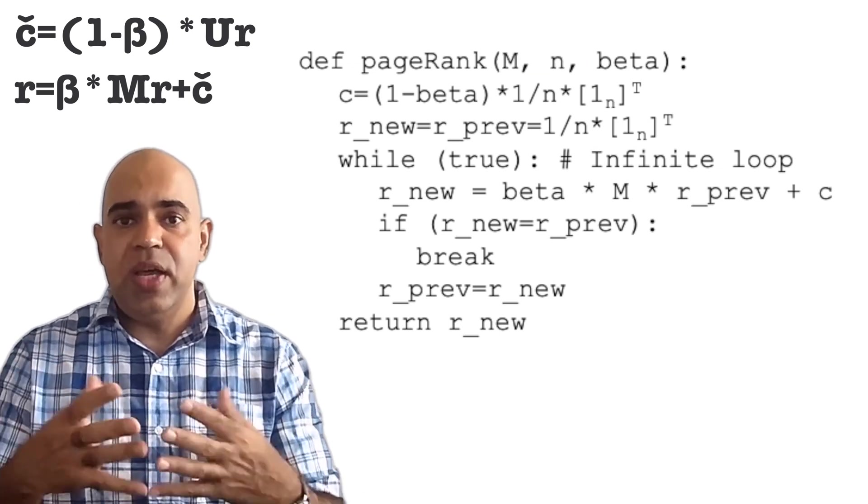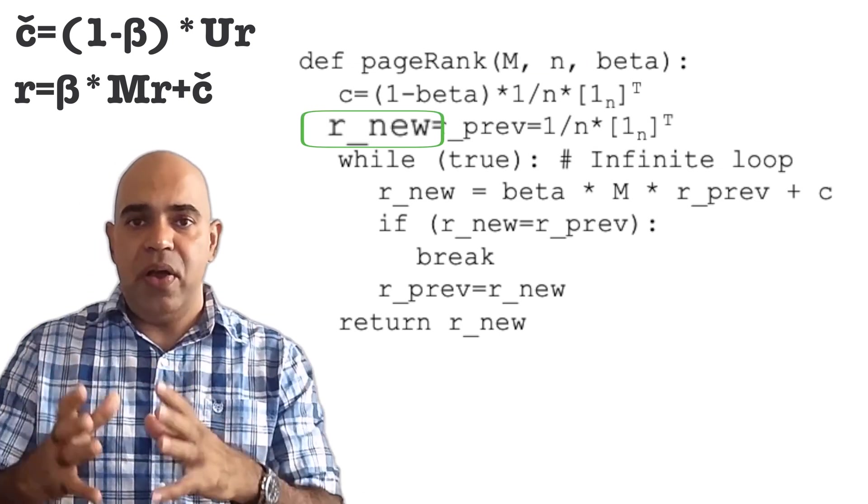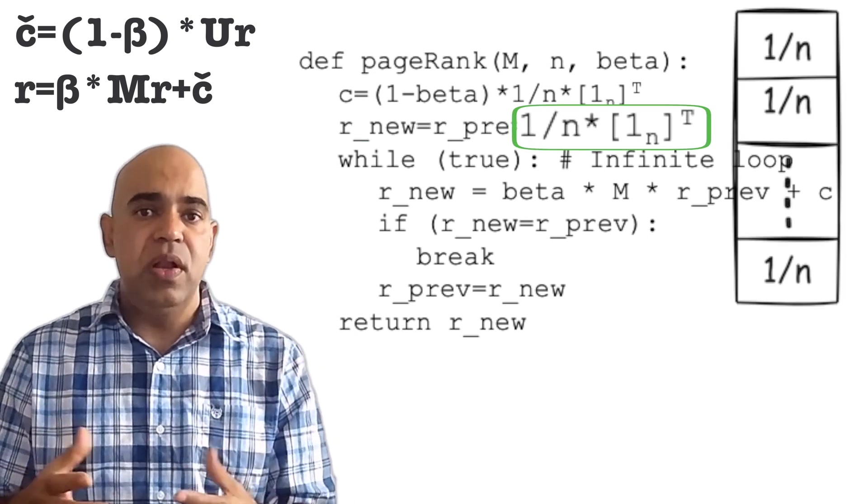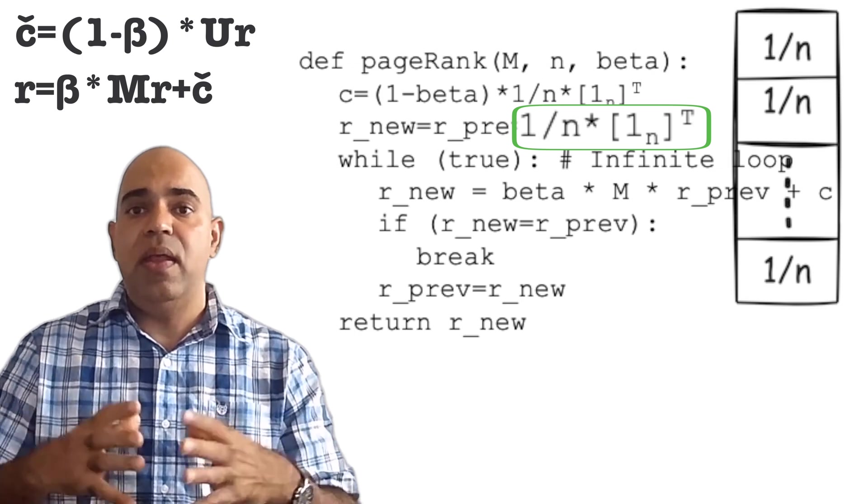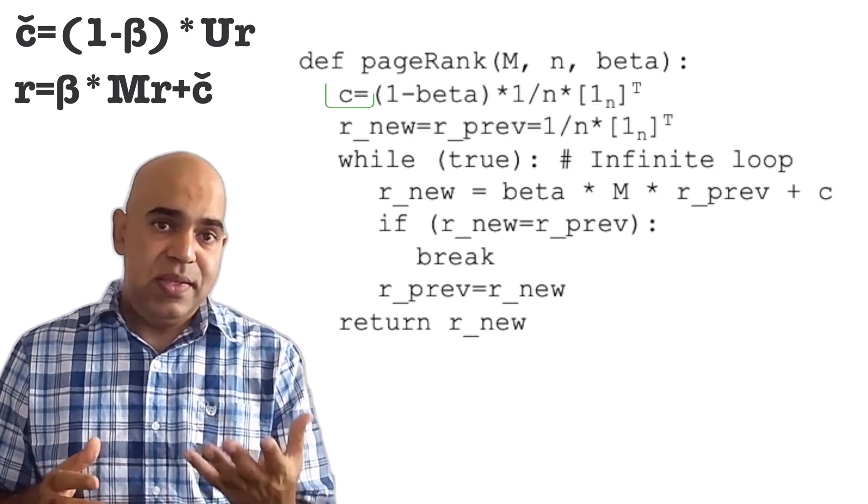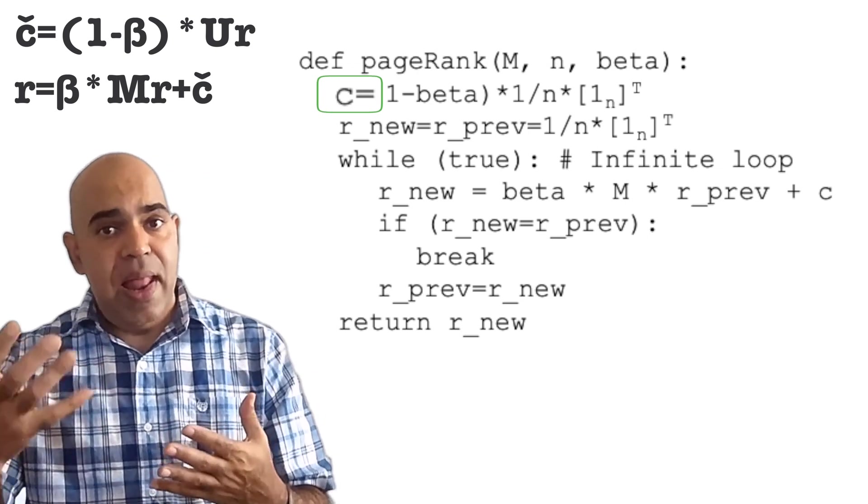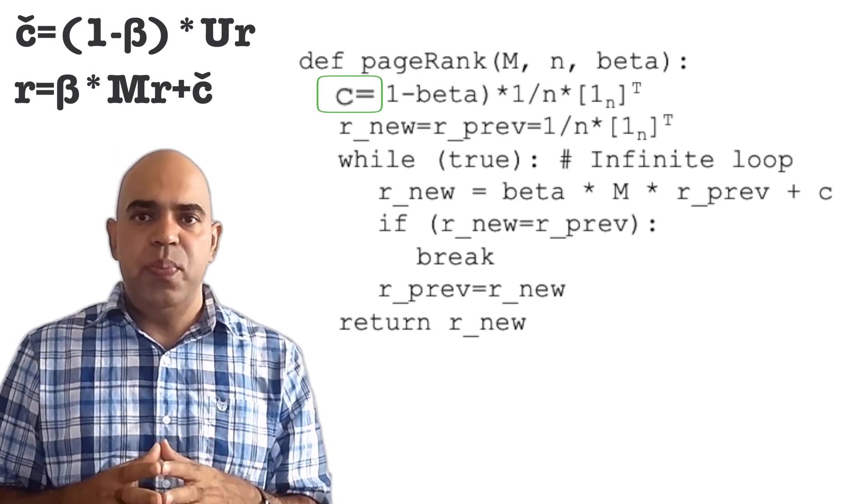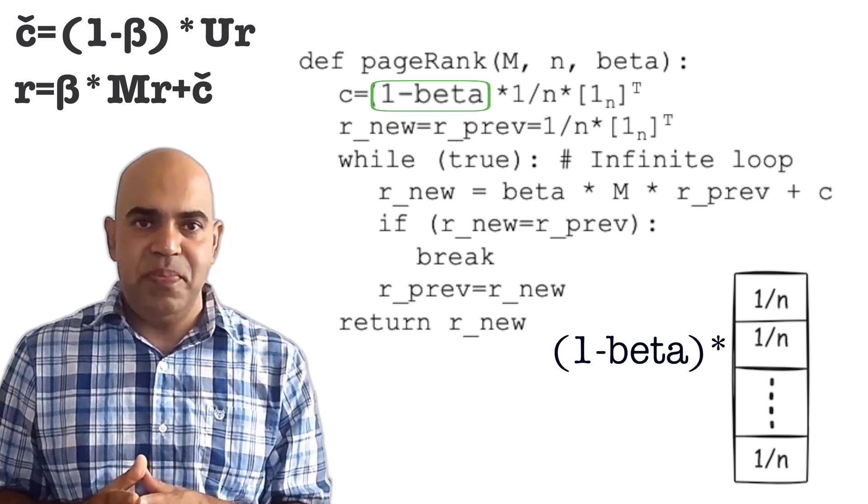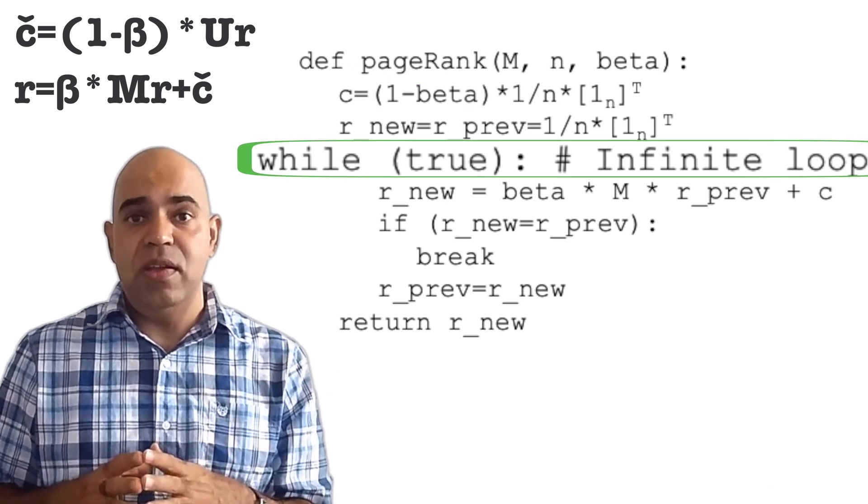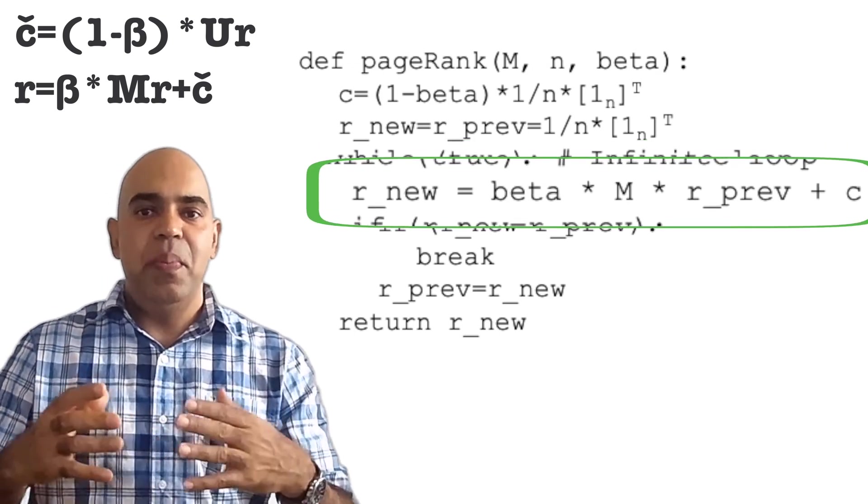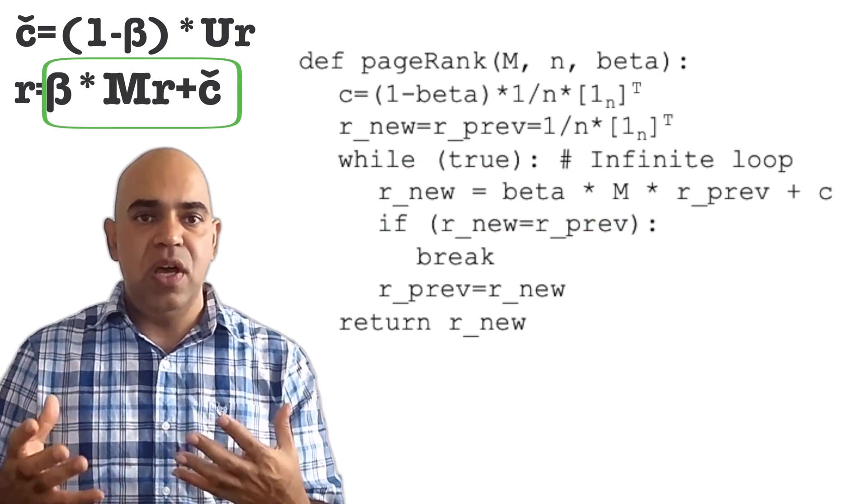In the initialization part, R new or R prev is a uniform column vector with N elements. R new or R prev sums up to 1. C is a column vector like R new or R prev, but the values are multiplied by 1 minus beta. We have the infinite loop like before. We update R new by computing this part of the equation.